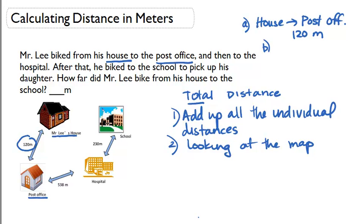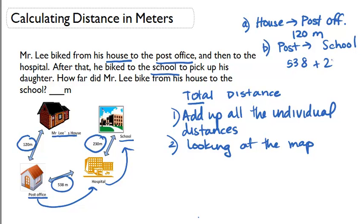Let's look at distance B. After that, he biked to the school to pick up his daughter. So we go from the post office to the school. Let's look at our map. We know to get to the school, we have to go post office to the hospital, then the hospital to the school. The distance between the post office and the hospital is 538 meters. The distance from the hospital to the school is 230 meters. So we're going to add the two. We have all our distances now.